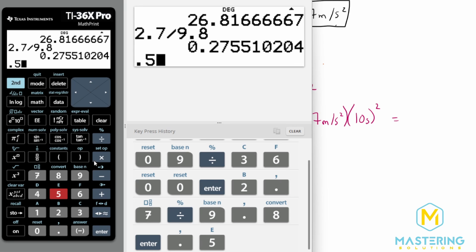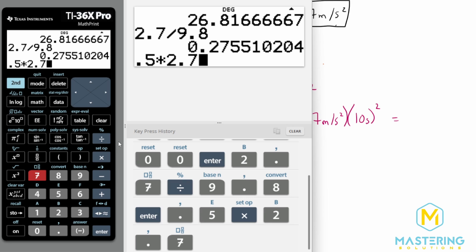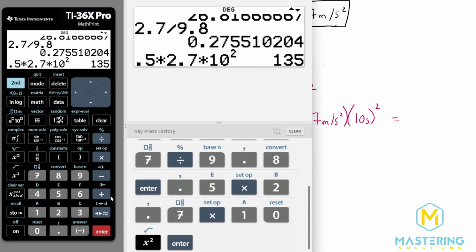Then we'll multiply that by the time, which we said is 10 seconds squared. So we have 0.5 times 2.7—you could also use 2.68 if you wanted to be more precise like we were talking about earlier—and we'll multiply that by 10 squared.